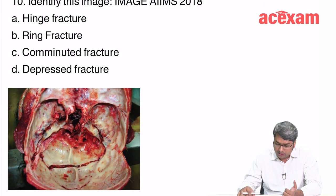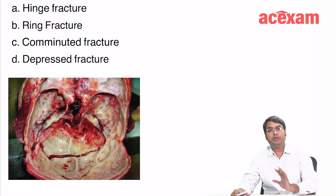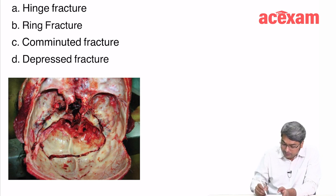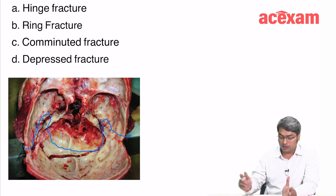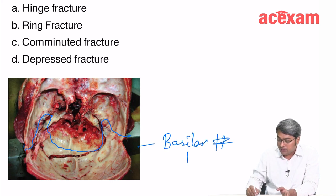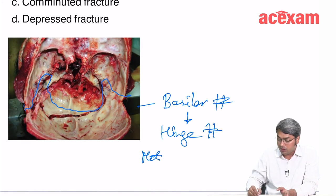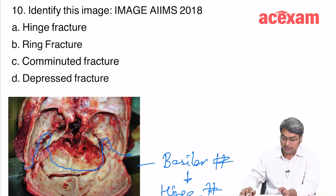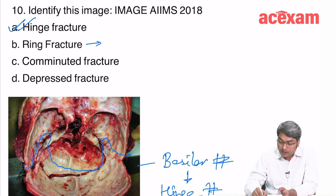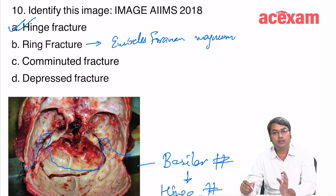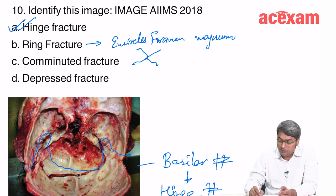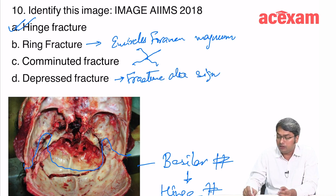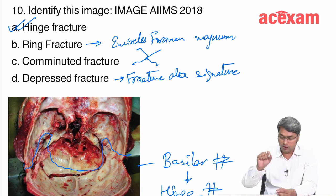The next image-based question shows a fracture line going from one end of the skull to the other — a basilar fracture. This is known as a hinge fracture or motorcyclist fracture. Ring fracture encircles the foramen magnum and is seen when a person falls from height and lands on the feet. Comminuted fracture appears like a spider web. Depressed fracture is also known as fracture à la signature and is seen when the head is hit with a hammer.